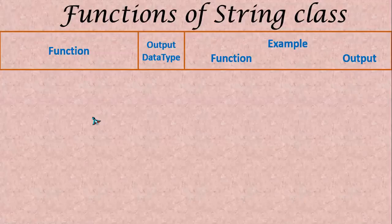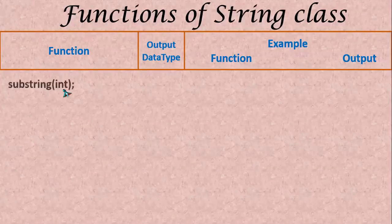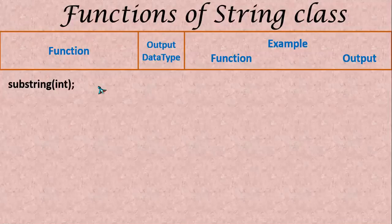Substring will accept two integer arguments or a single integer argument. Integer value they are given is the index number. Here it accepts one single integer value that is index number of the character present in the string. This is taken as starting index and the remaining all the index characters will get displayed. The output data type will be string type.